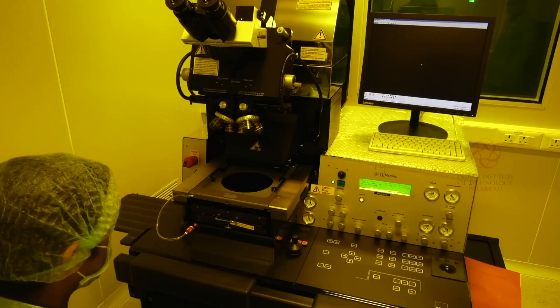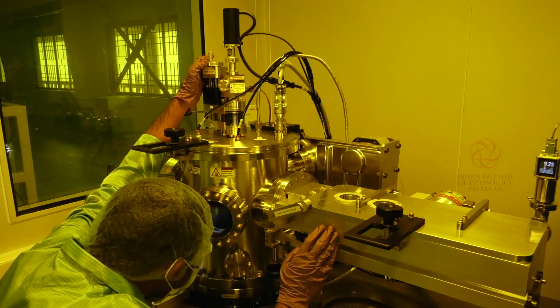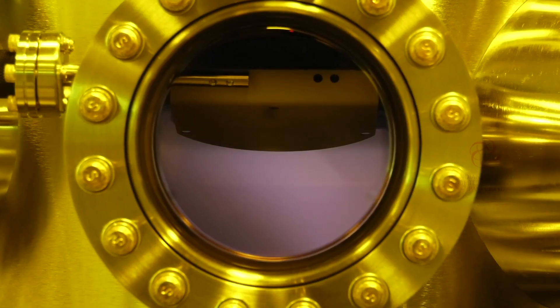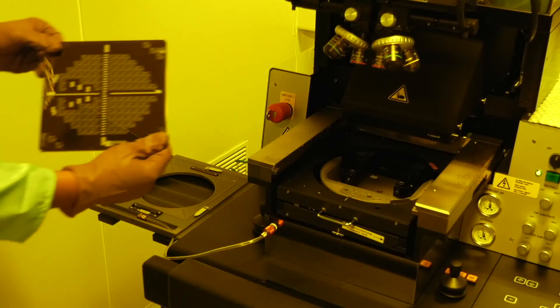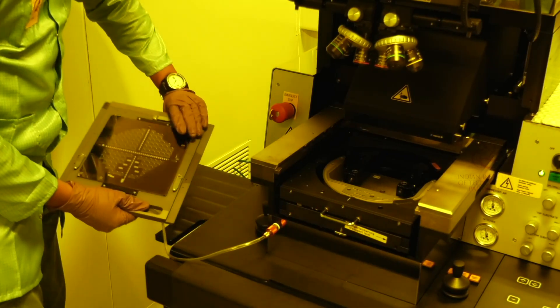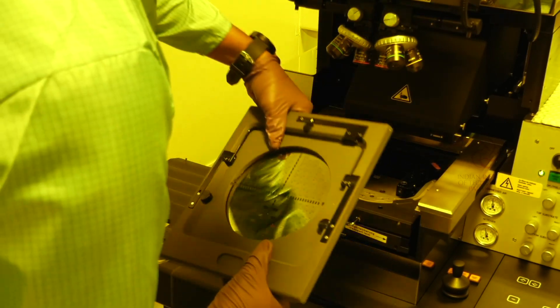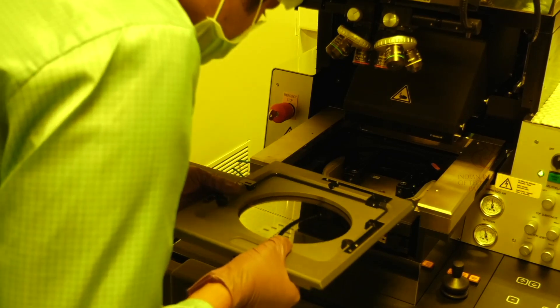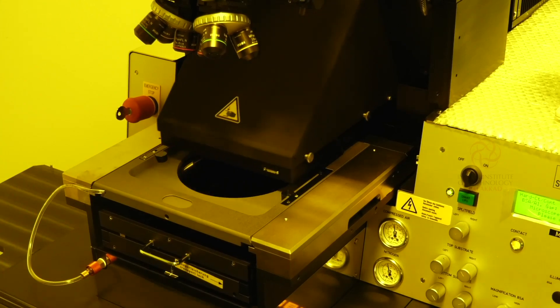The RF sputtering system can deposit thin layers of metals and nonmetals onto a substrate. The mask aligner can demarcate micrometer scale patterns onto the substrate using photolithography. This system is capable of performing multi-level photolithography on top and bottom side of substrates, with minimum features in the submicron range.